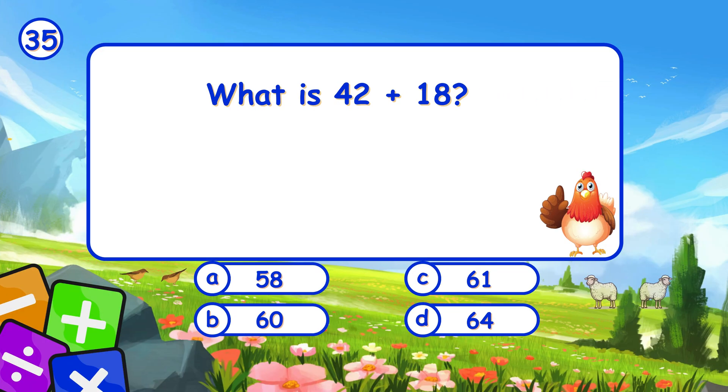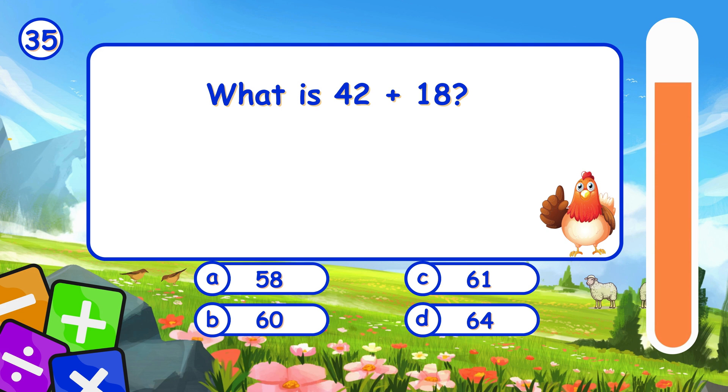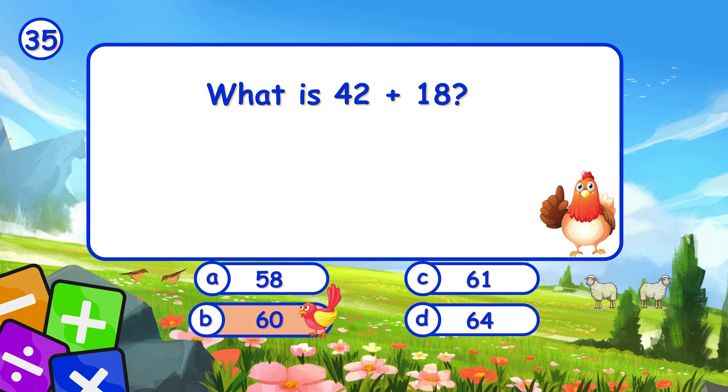What is 42 plus 18? It's B, 60. Adding 42 and 18 gives 60. See you next week.